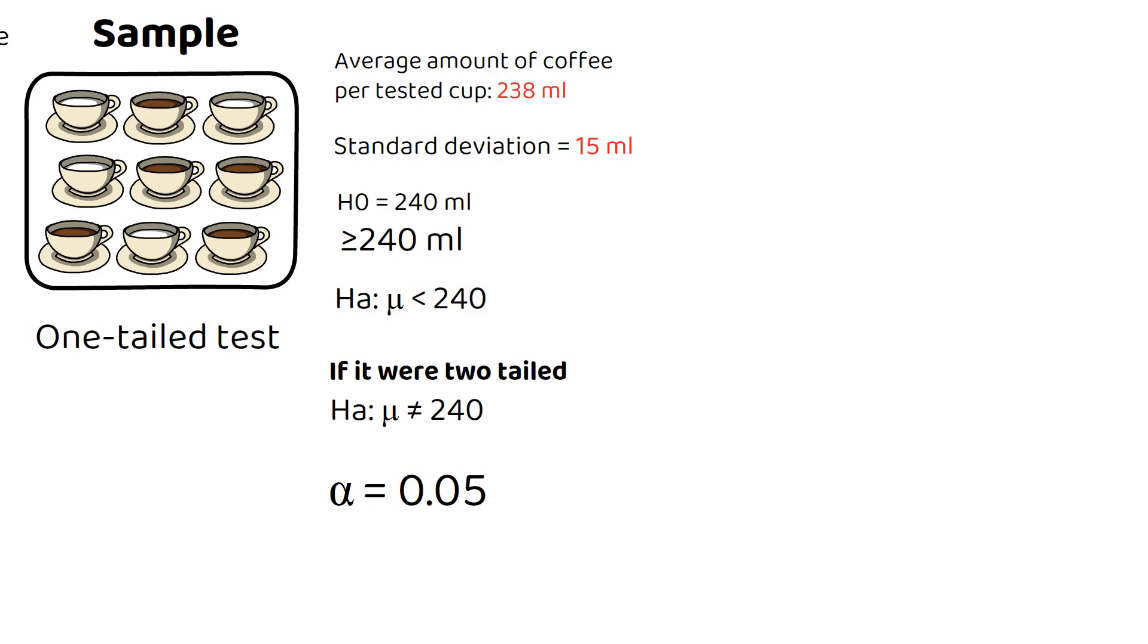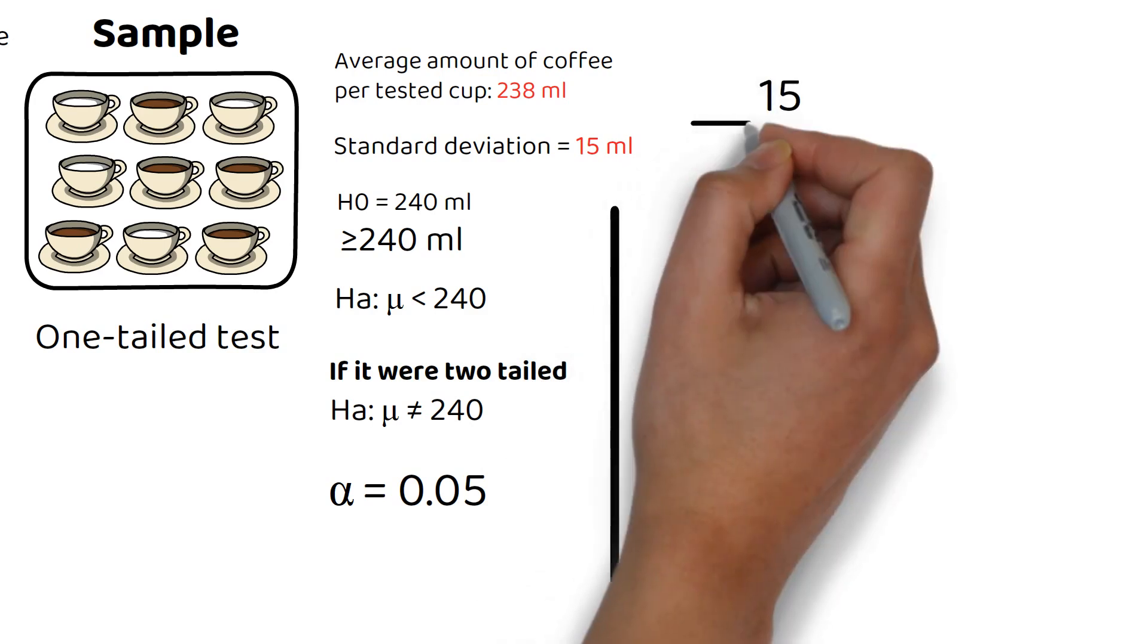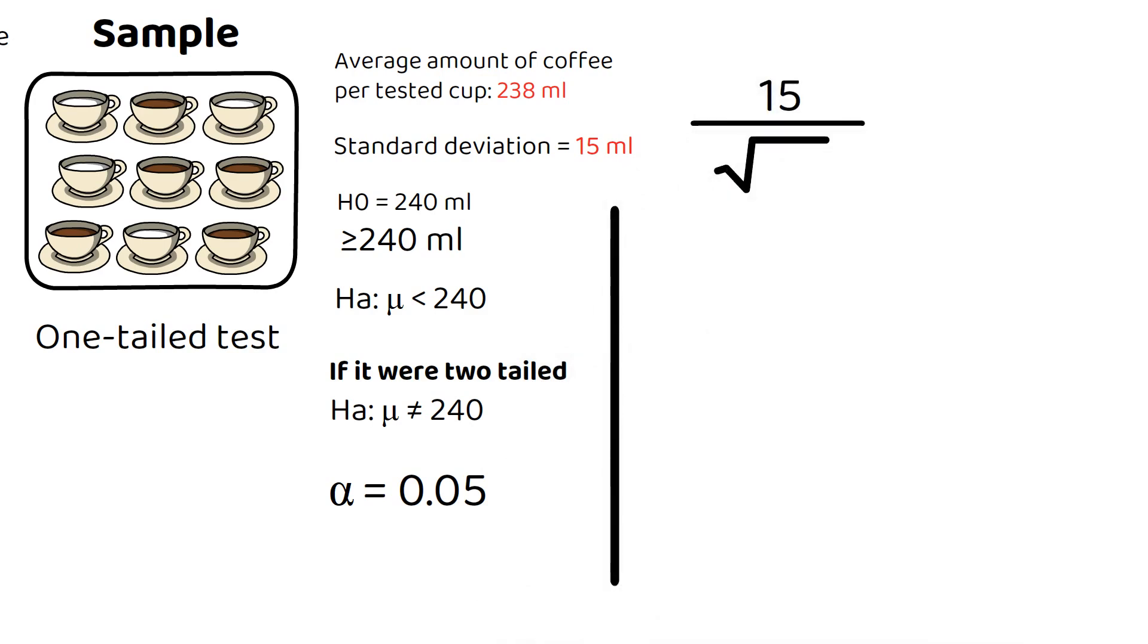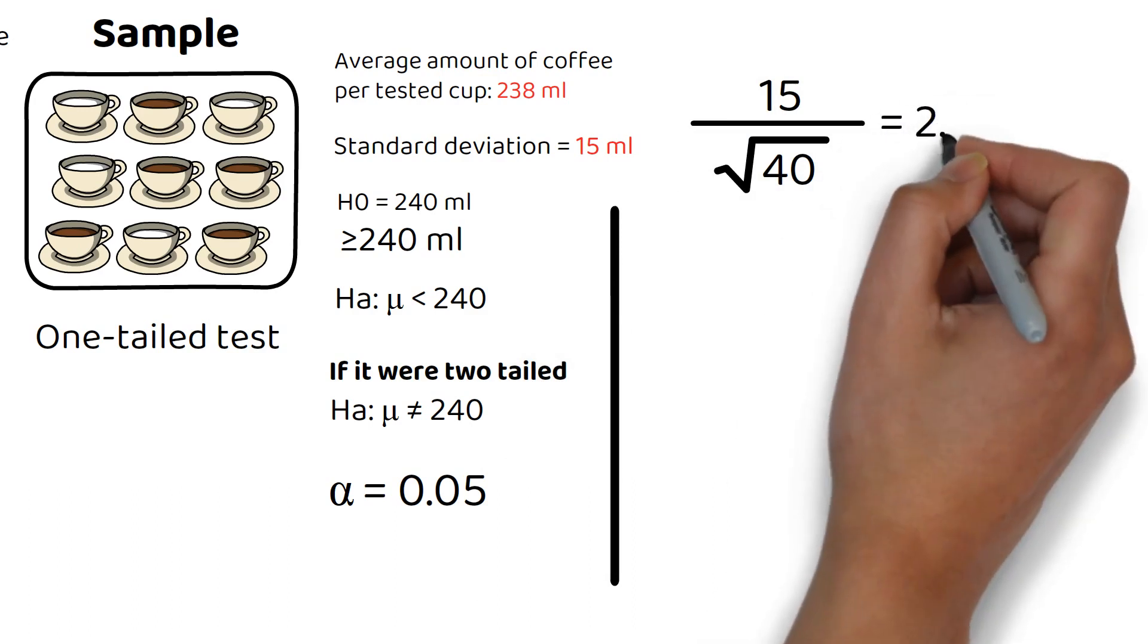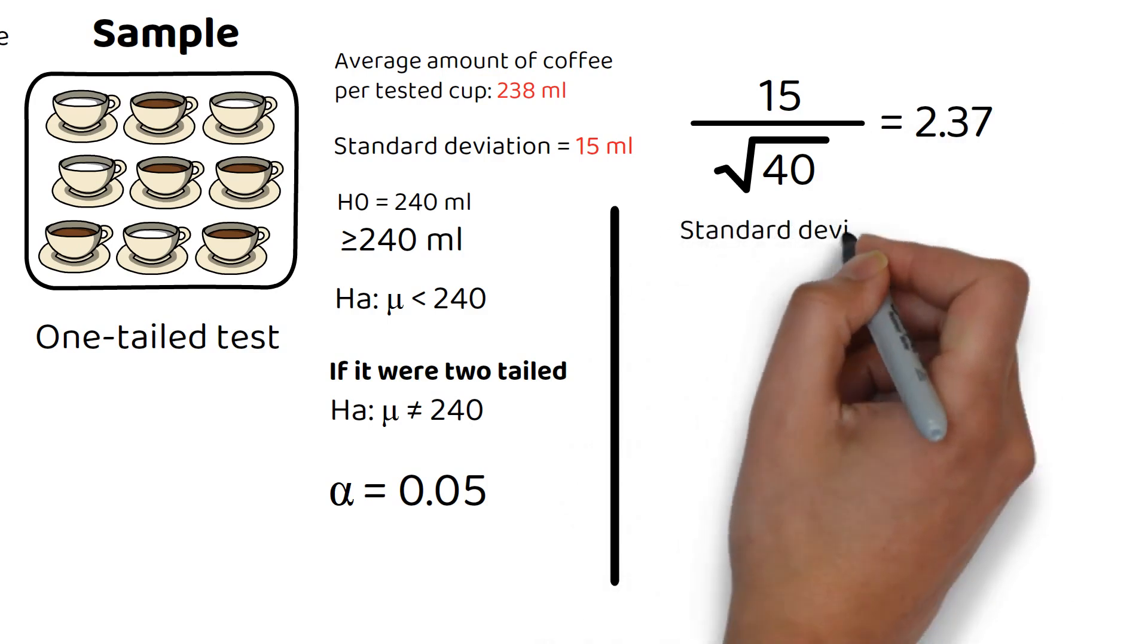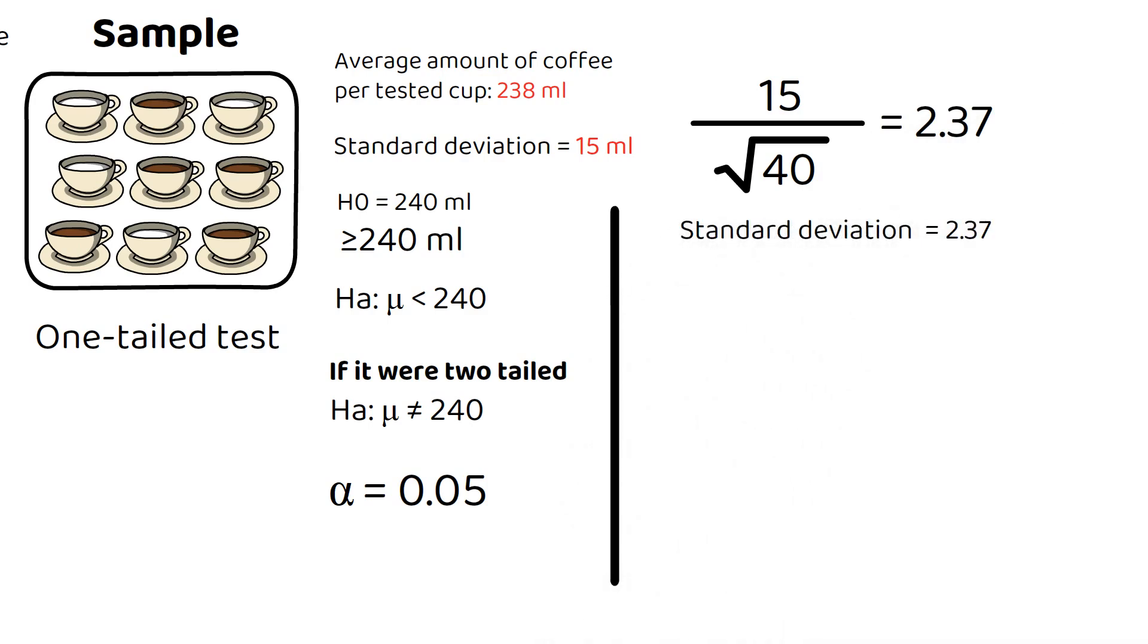Now, we can compute the test statistic. Our standard deviation of 15 needs to be divided by the square root of 40, since it's a range we're dealing with, as we discussed last module. 15 divided by the square root of 40 is about 2.37. That means that the standard deviation that we're going to use is 2.37.